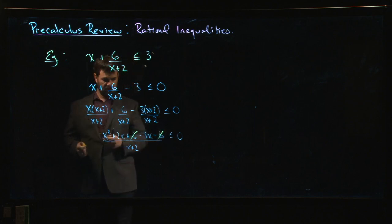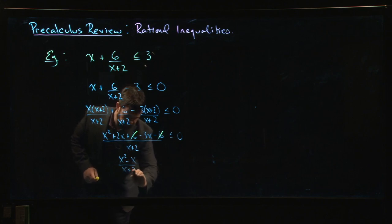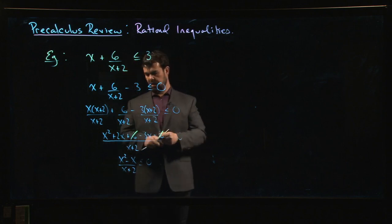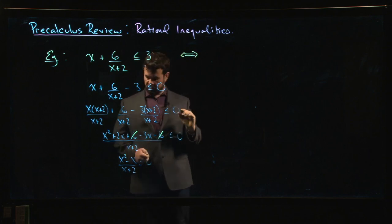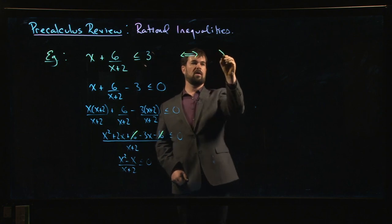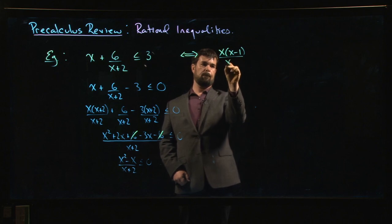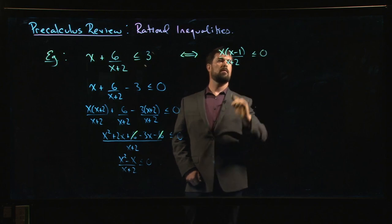I can cancel those 6s. 2x minus 3x, that gives me negative x. So I have x squared minus x over x plus 2, which I want to be less than or equal to 0. Okay, so now we realize that this inequality we started with, it's equivalent to the following inequality: x times x minus 1 over x plus 2 being less than or equal to 0. And the great thing about that is we know exactly how to solve.